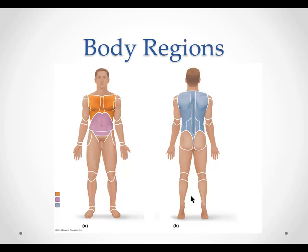Next, we come to body regions. Looking at the regions of the body, there is specific terminology we use to make sure we're being consistent in our communication. If we're referring to the mouth, we call that the oral region. If we're referring to the eye, we call that the orbital region. The chin is the mental region. This whole region above the diaphragm is the thoracic region. The region inside the elbow is the antecubital region. The abdominal region is the purple region here, and the umbilical region is specifically the region around the navel.